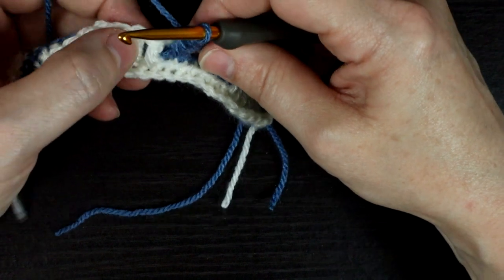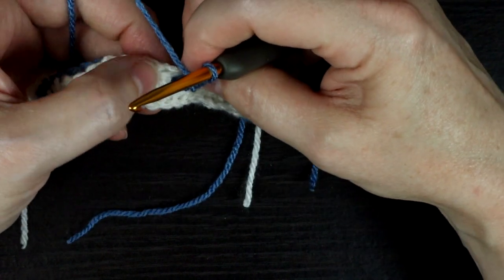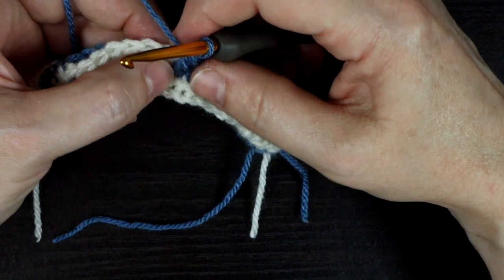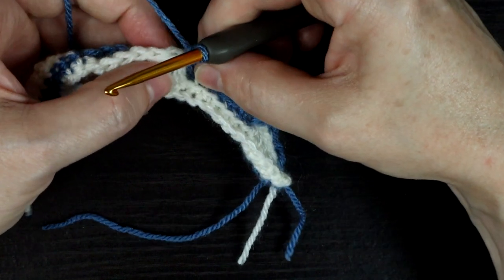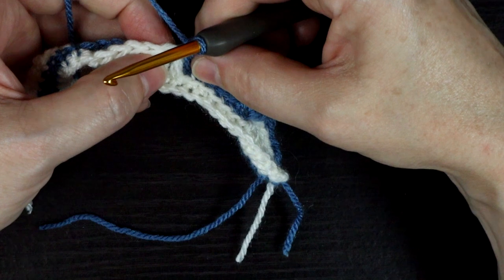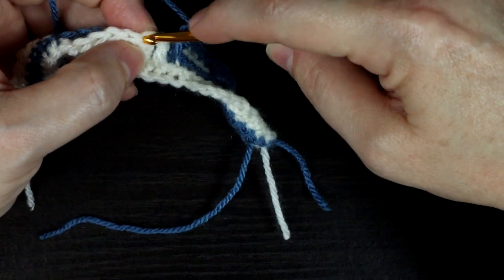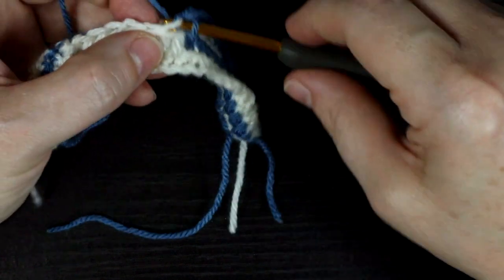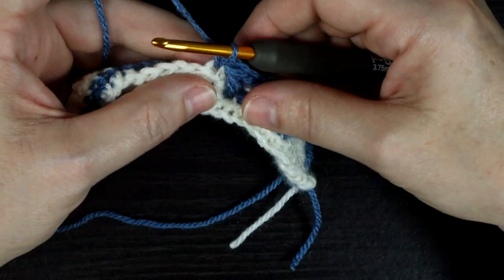Now this angled stitch lays over the top of this double crochet and you work your next stitch into the double crochet after that. This can be a place where it's easy to get off your stitch count so be careful.